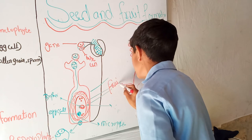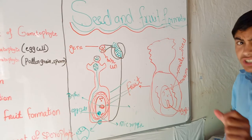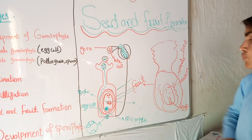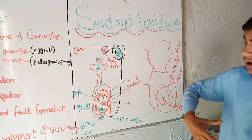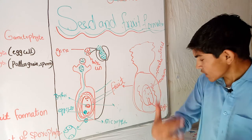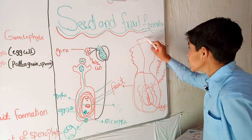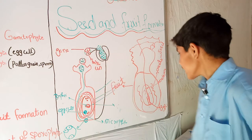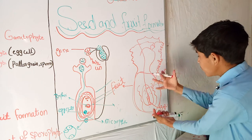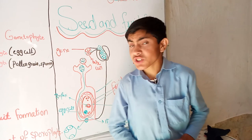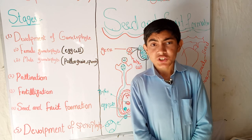Our next topic is the development of the sporophyte. The sporophyte is actually the next generation — this is the last stage in the life cycle of the flower. When the zygote is formed, the seed is formed, and the fruit is also formed. When the zygote gains a favorable condition, it converts back into a new plant, which grows, and then leads to the production of gametophytes again. The endosperm provides nourishment to this new plant. This was the structure and life cycle of the flowering plant.